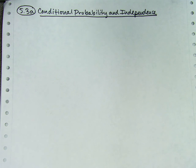Hello, Stats Class. Here's lesson 5.3a, which is about conditional probability and independence. This material will not be on the quiz on Friday. The quiz covers only 5.1 and 5.2. So this will be on next week's quiz.